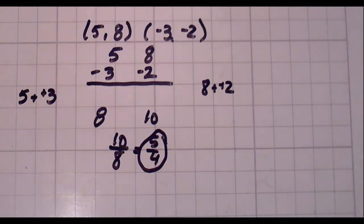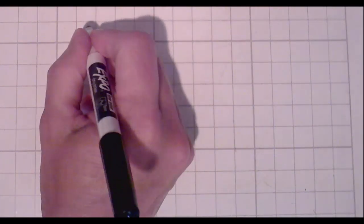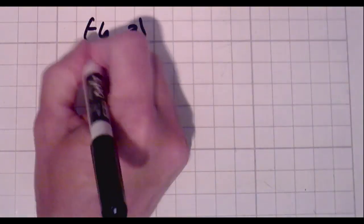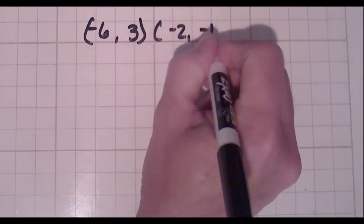You can do it the old way. You can do it this way. You can do it whatever way works easiest for you. As long as you're consistent. We're going to do one last problem. Let's do negative 6, 3, negative 2, negative 1.